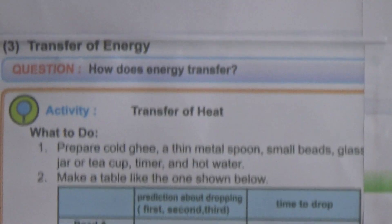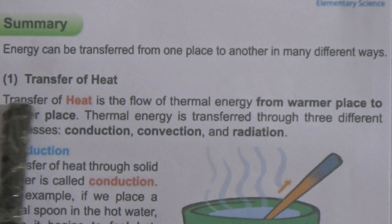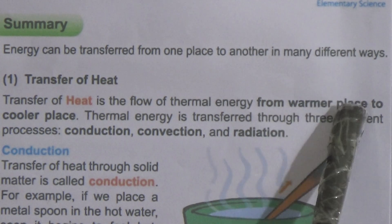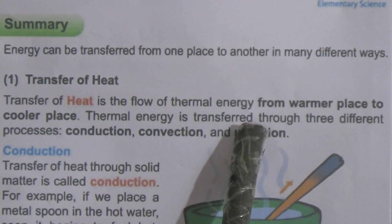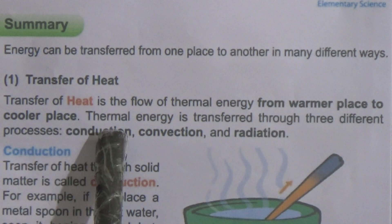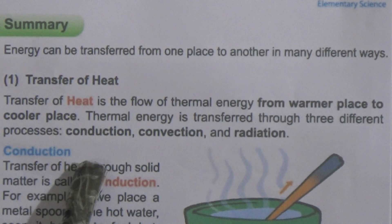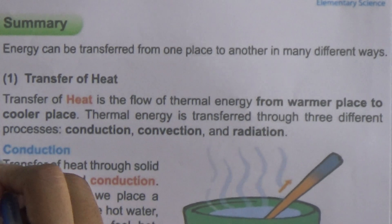Now come to the transfer of energy — how does energy transfer? Energy can be transferred from one place to another in many different ways. Transfer of heat is the flow of thermal energy from a warmer place to a cooler place. Thermal energy is transferred through three different processes: conduction, convection, and radiation. Conduction is the transfer of heat through solid materials.